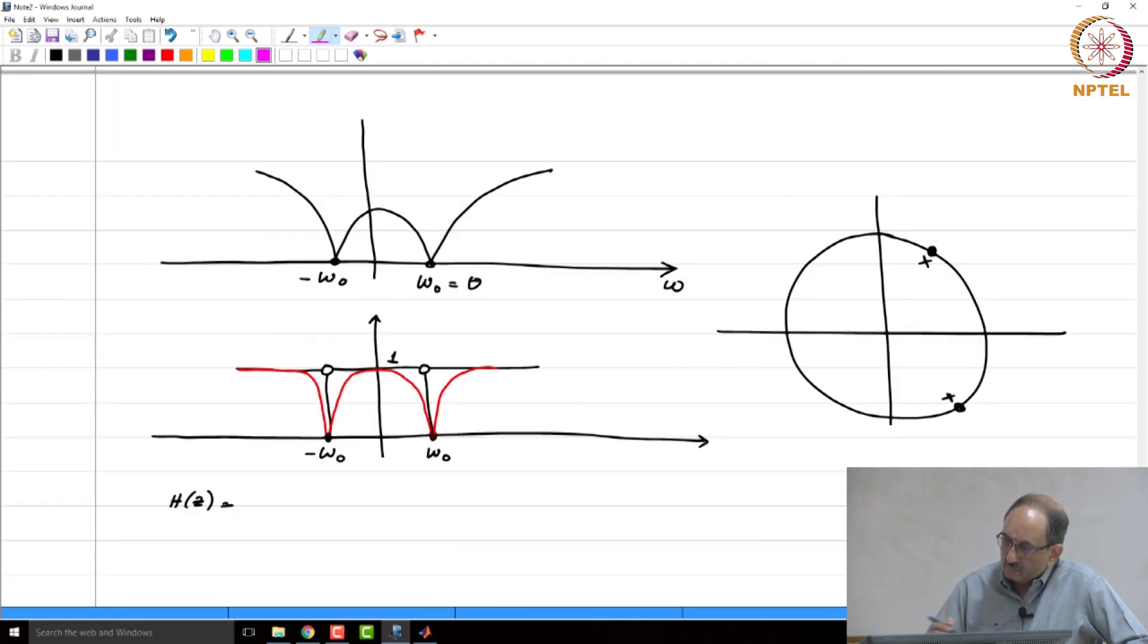Therefore, h of z is 1 minus 2, r is 1. Therefore, 2 r cos theta becomes 2 cos theta z inverse plus r squared z to the minus 2, r is again 1. Therefore, this is z to the minus 2. But, to make it better, you are going to introduce poles. So, you are going to introduce poles at r e to the plus and minus j theta. Therefore, it is 1 minus 2 r cos theta z inverse plus r squared z to the minus 2.